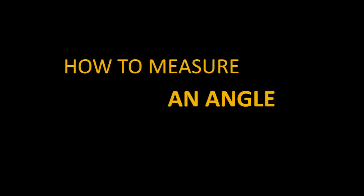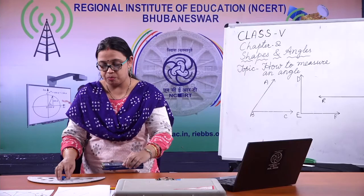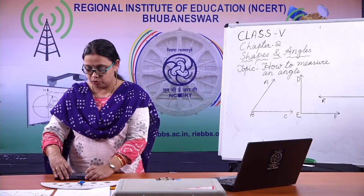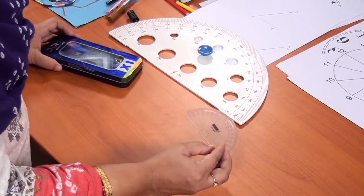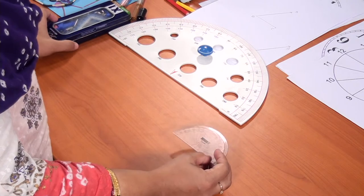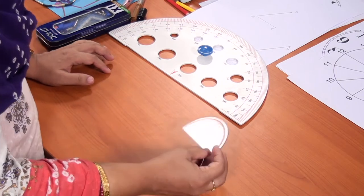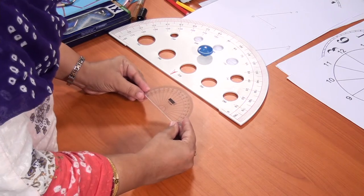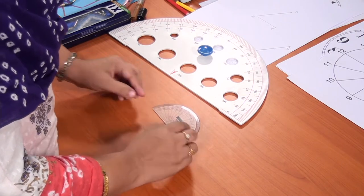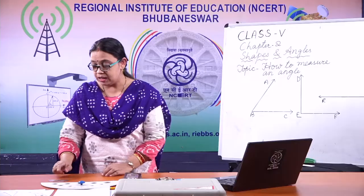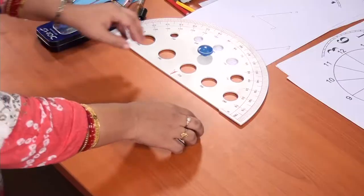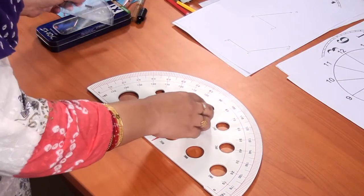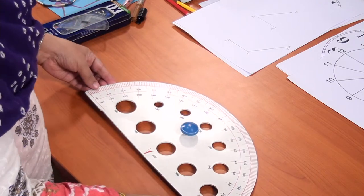Children, all of you have an instrument box. If you open it, you will find a D-shaped instrument. This D-shaped instrument is called a protractor. It is used to measure angles and will be used in your copy. But when we use it on the board, we have a bigger D-shaped protractor.